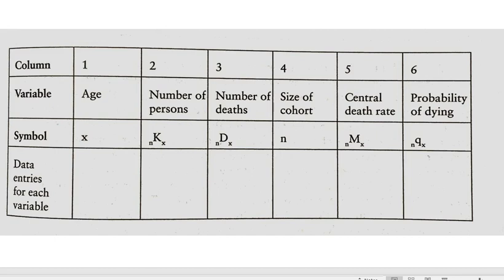The life table has a particular set of columns, and you can see here the first six include the variables age, number of persons in the subgroups population, number of deaths, the size of the cohort, what's called the central death rate, and the probability of dying within that particular time frame.